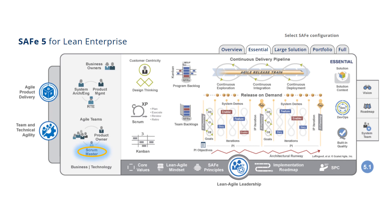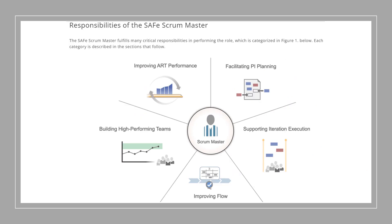As we are aware, we started discussing about the two components of each SAFe configuration for lean enterprise. We already discussed business and technology, and we discussed about agile teams. Now we're going to discuss about Scrum Master. As discussed in my previous video, there are five key responsibilities of a SAFe Scrum Master: facilitating PI planning, supporting iteration execution, improving flow, building high performing teams, and improving ART performance.